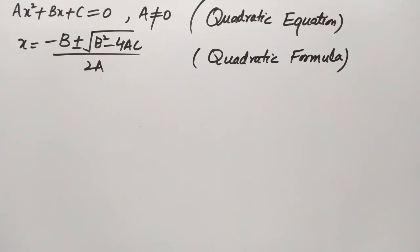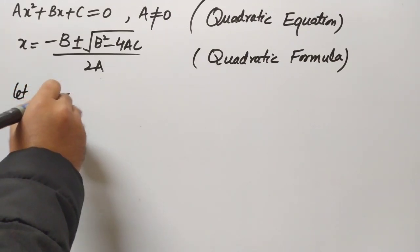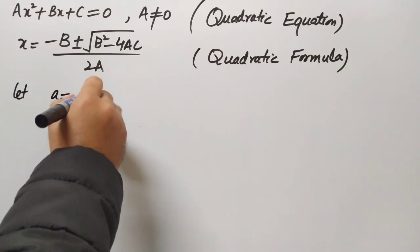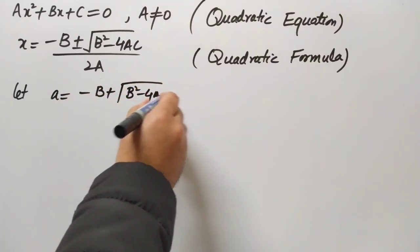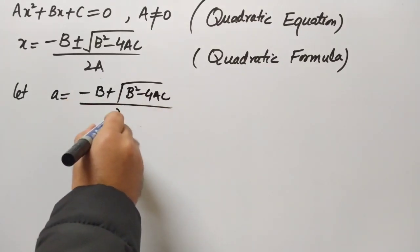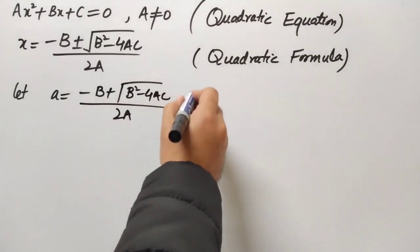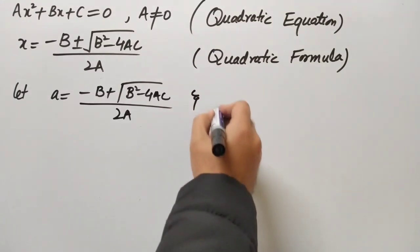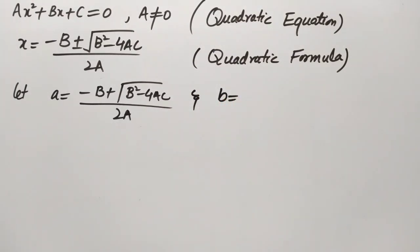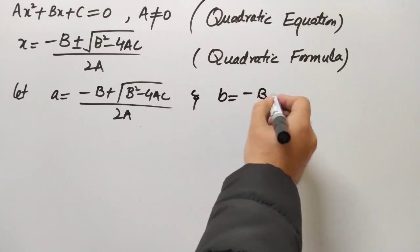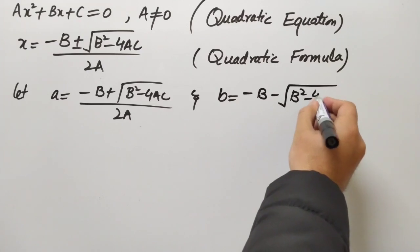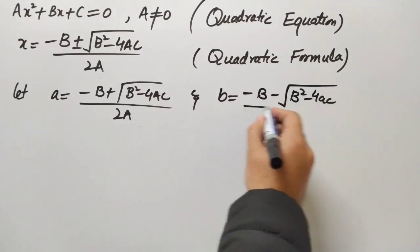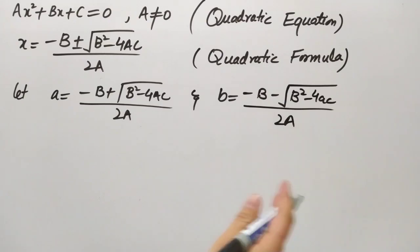This quadratic formula will give us two roots of the quadratic equation. Let the two roots be: α = (−b + √(b² − 4ac)) / 2a as the first root, and β = (−b − √(b² − 4ac)) / 2a as the second root.